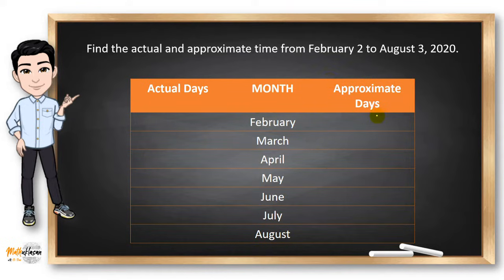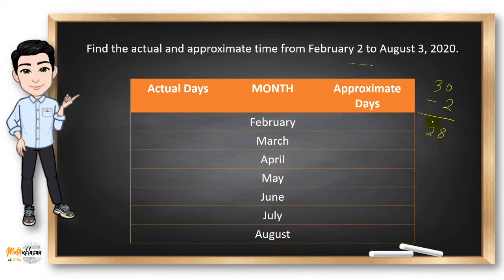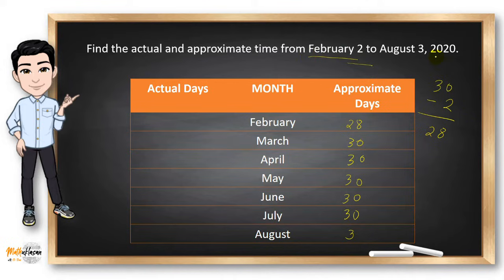Another example. The approximate days are easier to compute. From February to August, we consider all months as 30 days. Starting with February 2, we subtract 30 minus 2, giving 28. We then have 30 for the remaining months, except for August. For the actual days, February in 2020 has 29 days because it's a leap year. So we subtract 29 minus 2 because 2 days had passed, giving us 27 for February.